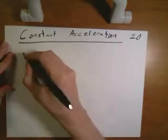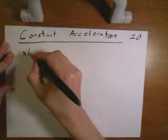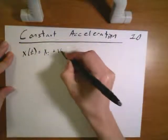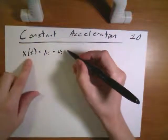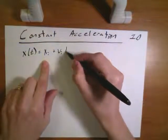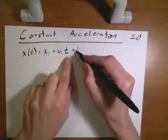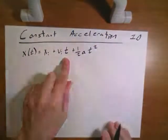We've said that one of our equations of motion for constant acceleration is of the form that the position as a function of time is equal to some initial position, plus the initial velocity times time, plus one-half the acceleration times time squared.